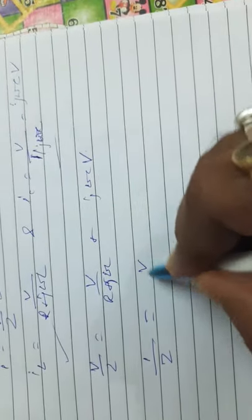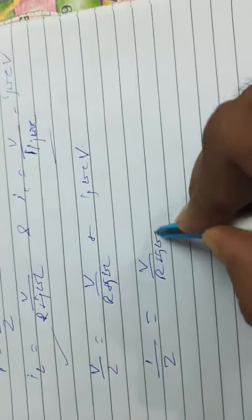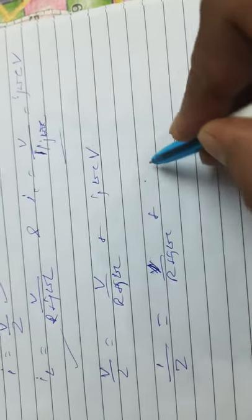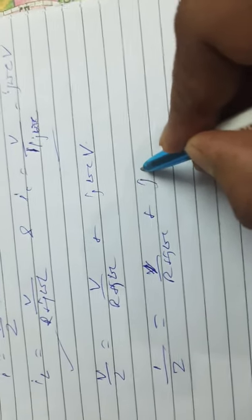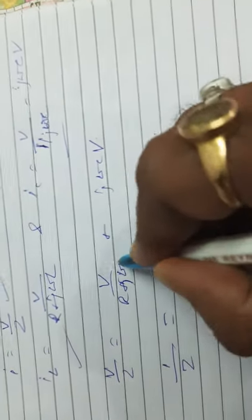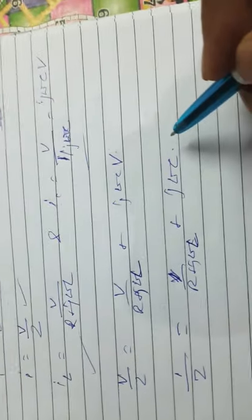Eliminating V, we get 1/Z = 1/(R + jωL) + jωC. This is equation 1, and 1/Z = 1/(R + jωL) + jωC is equation 2.